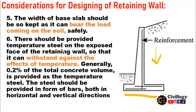Consideration six: Temperature steel should be provided on the exposed face of the retaining wall so that it can withstand the effects of temperature. Generally, 0.2 percent of the total concrete volume is provided as temperature steel. The steel should be provided in both directions — vertical and horizontal — which corresponds to the main bars and distribution bars.